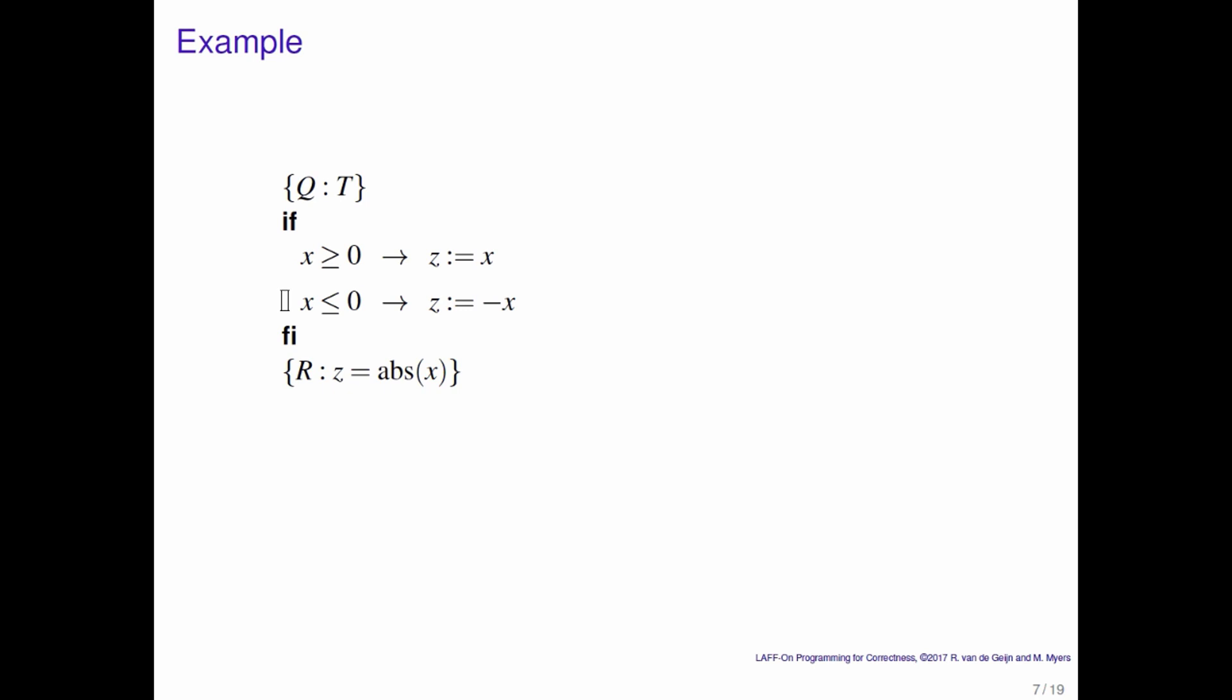So the question now is, is this a correct code segment? Well, what do we do? We know that the precondition q must imply the weakest precondition. We notice that the precondition is just true. And therefore we know that the weakest precondition actually has to be true if this code segment is to be correct.